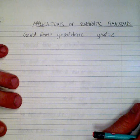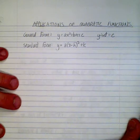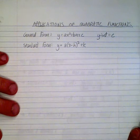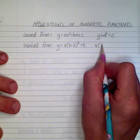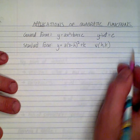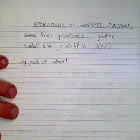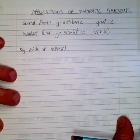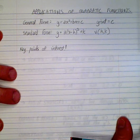Another form of the quadratic function is the standard form, where we have the vertex. The vertex is actually the h and k value. When solving or graphing these quadratic functions, there are a few pieces that are of significance.